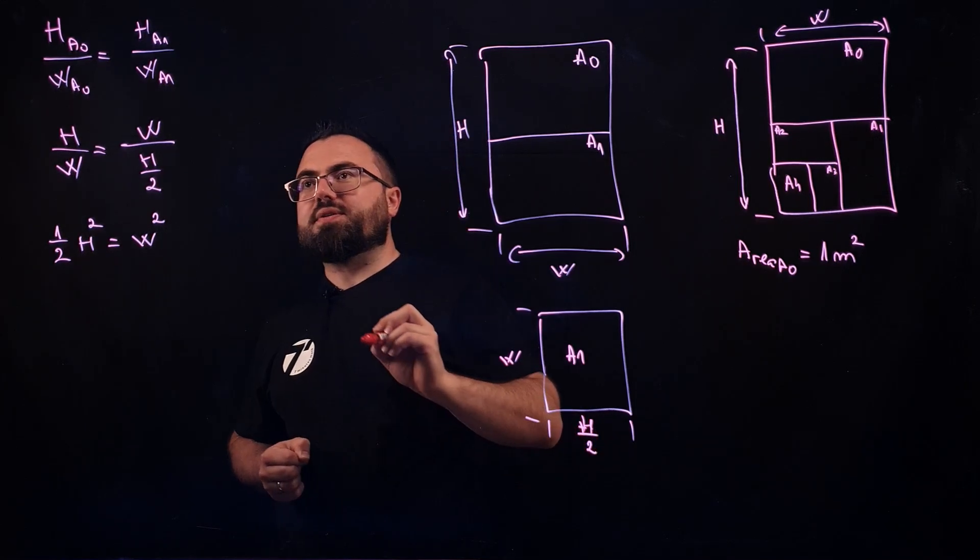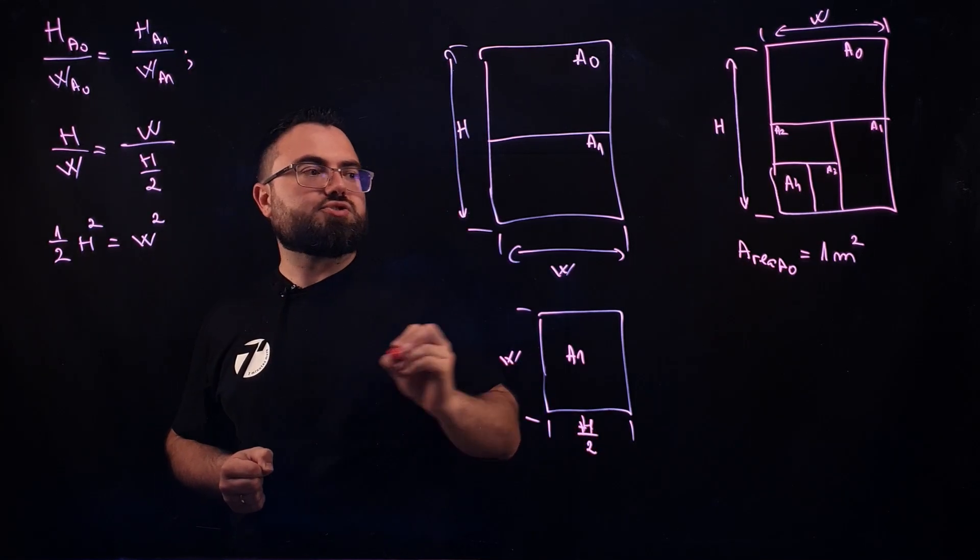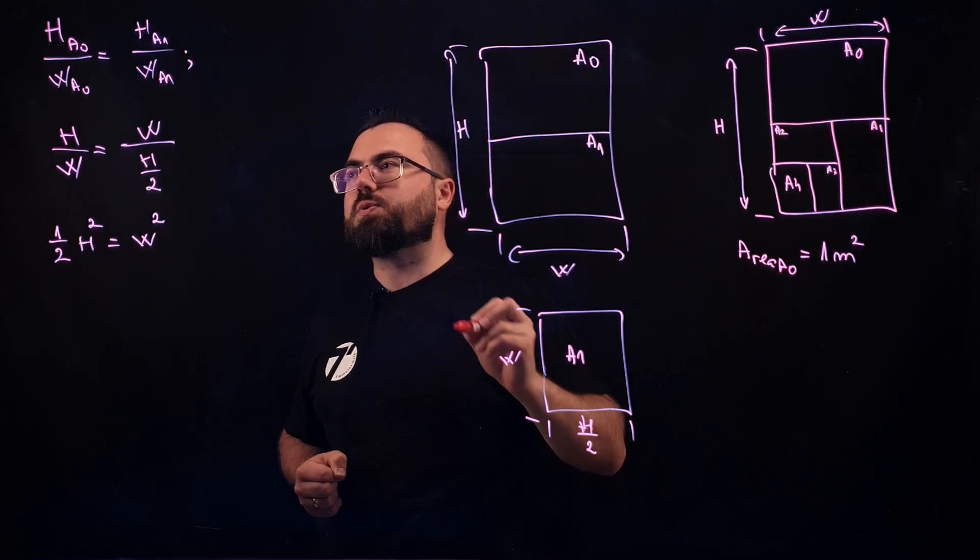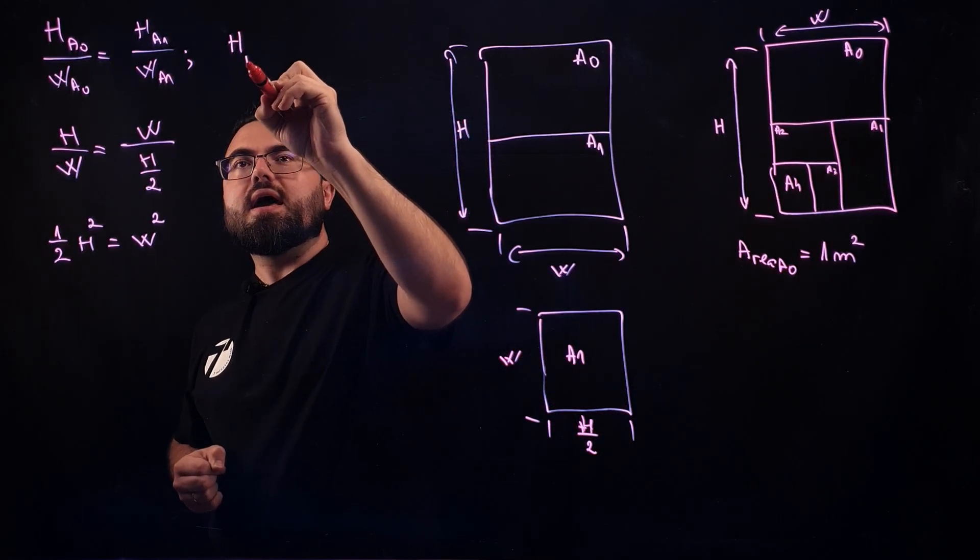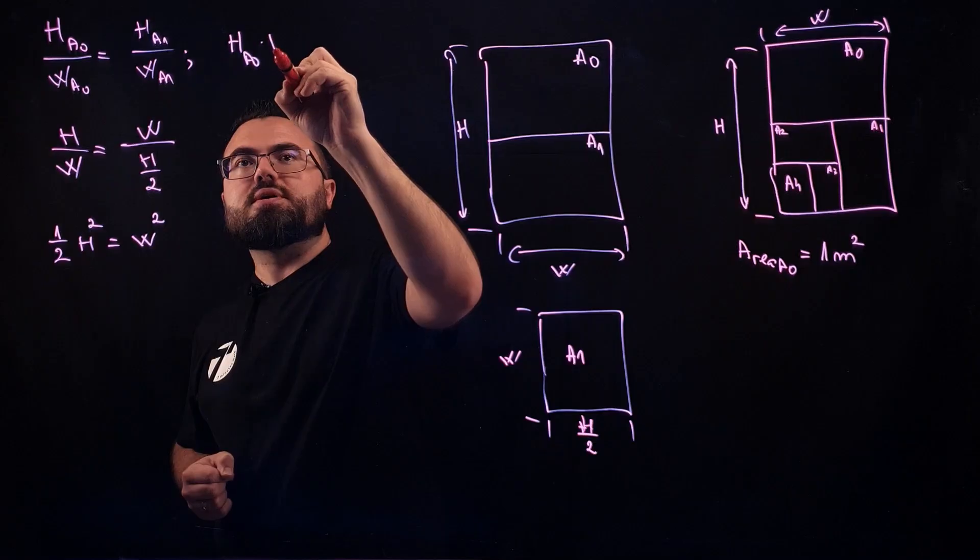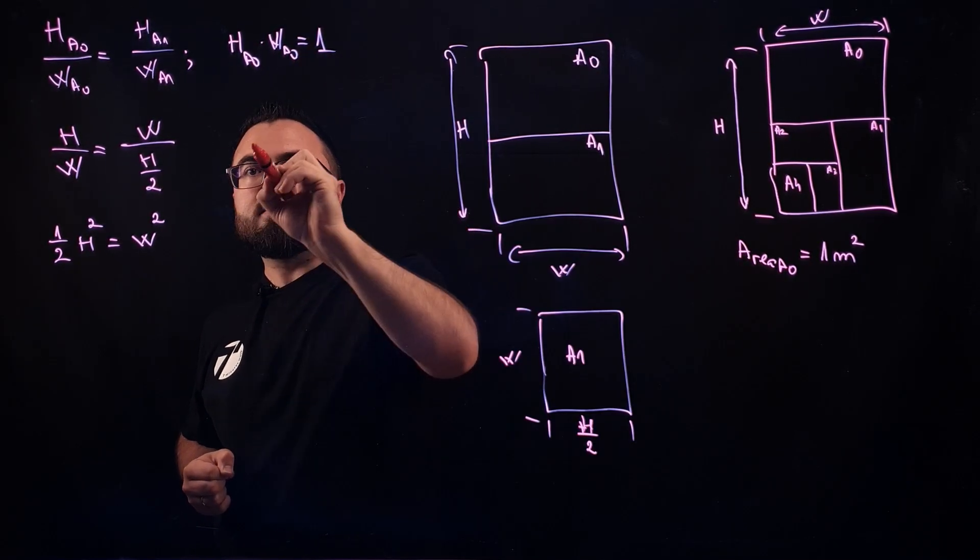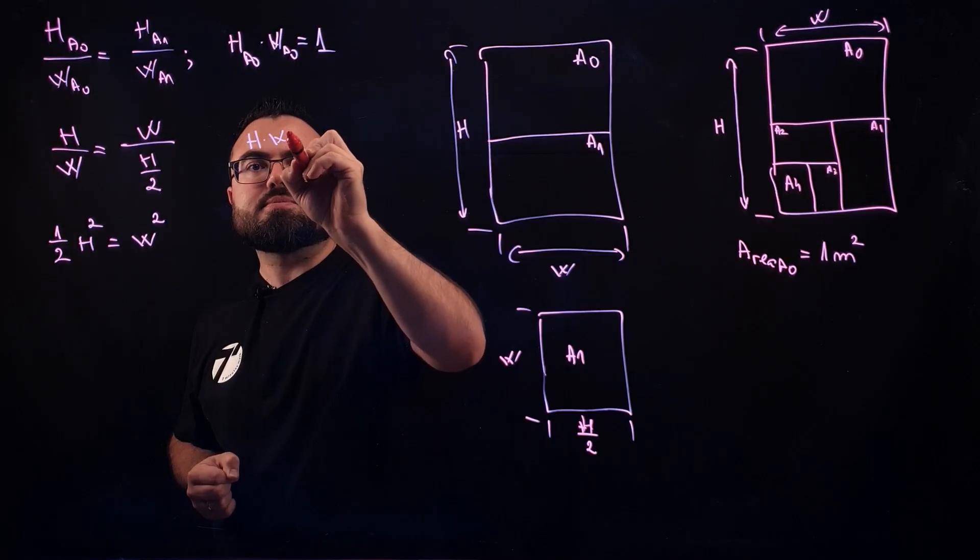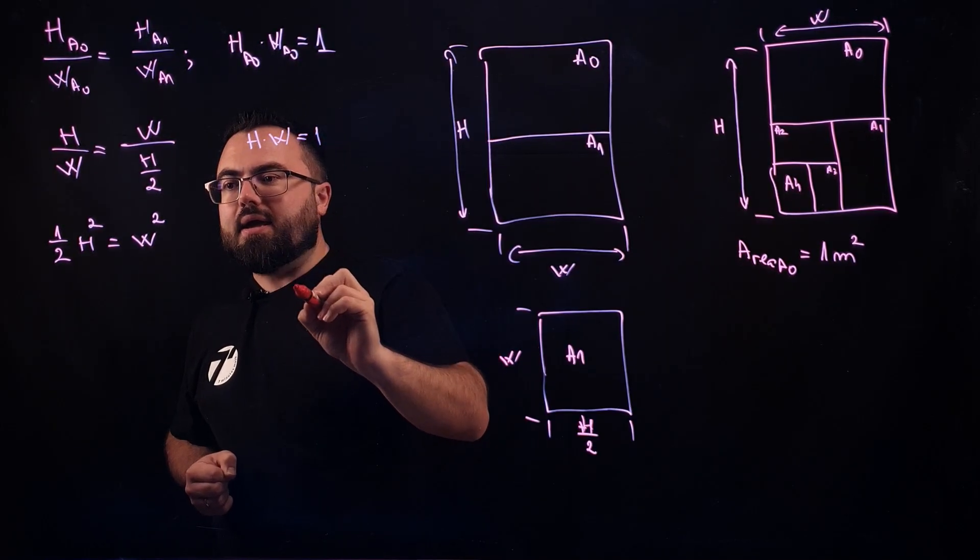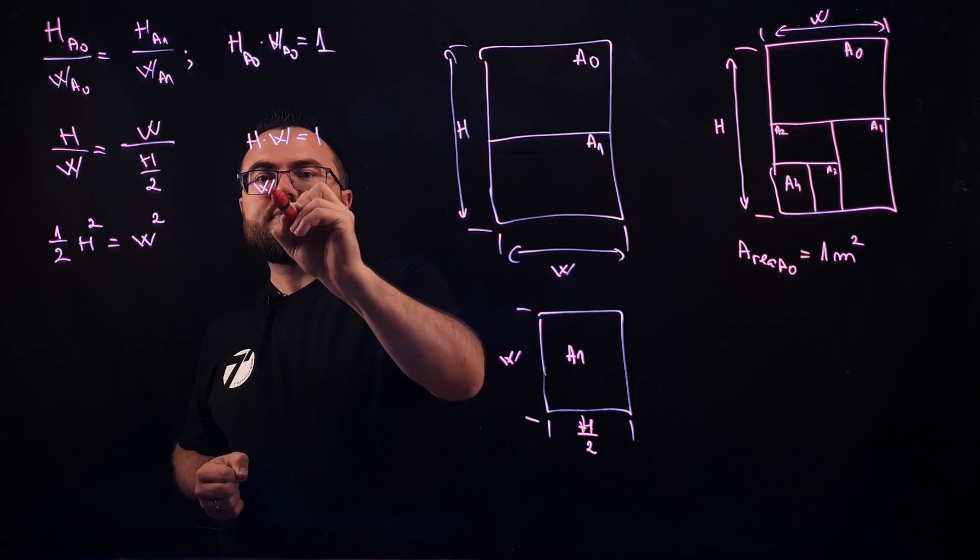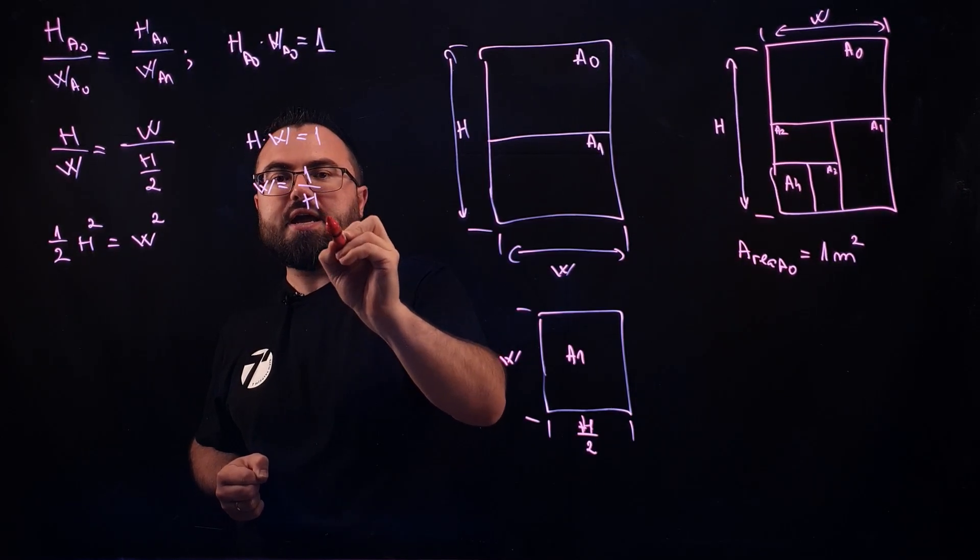Now, the other important aspect here, which we haven't mentioned yet, is that the area of an A0 is one square meter. That means that the H of an A0 times the width of an A0 equals one. This means that H times W equals one. And we can easily put out here the W as being one over H.